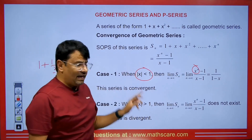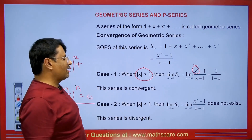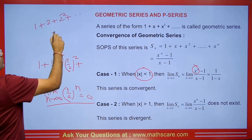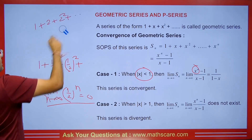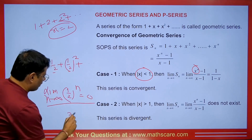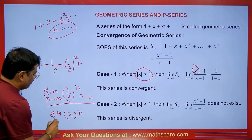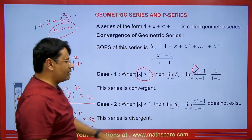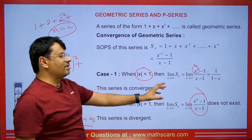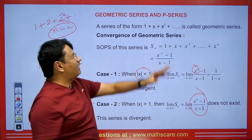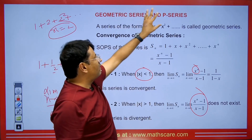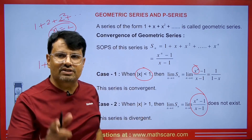But if the value of x is greater than 1, that is mod x greater than 1, then consider a series like 1 plus 2 plus 2 squared. Here the value of x or r is 2. If we take the limit of 2 to the power n as n tends to infinity, the value becomes infinite — it won't exist. So in that case, this series is called divergent. So: if x is less than 1, the series is convergent; if x is greater than 1, the series is divergent.